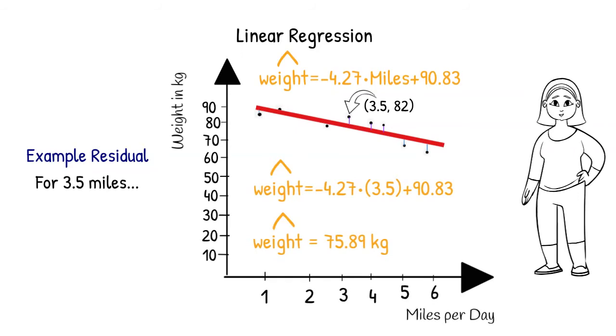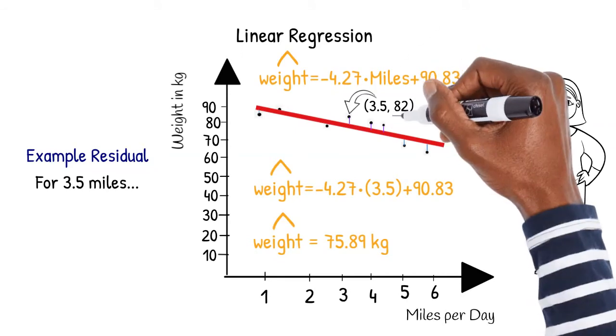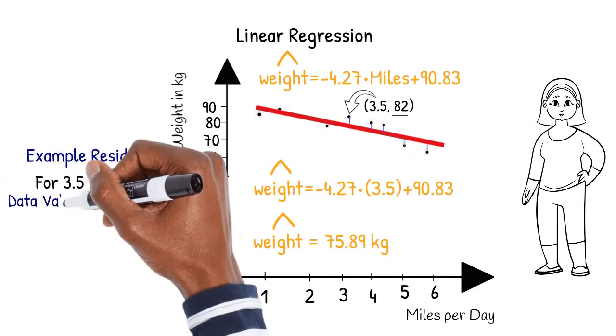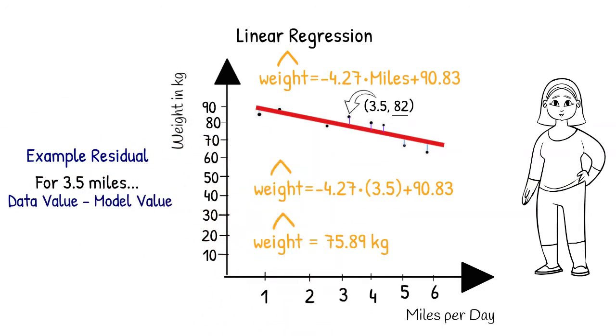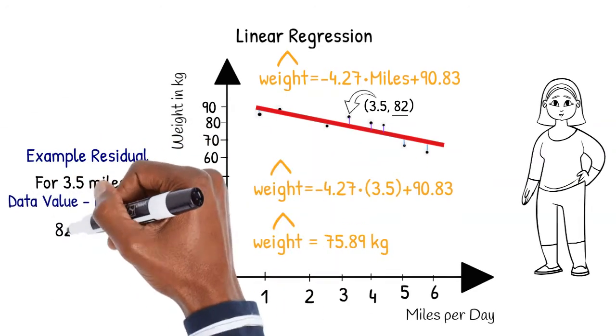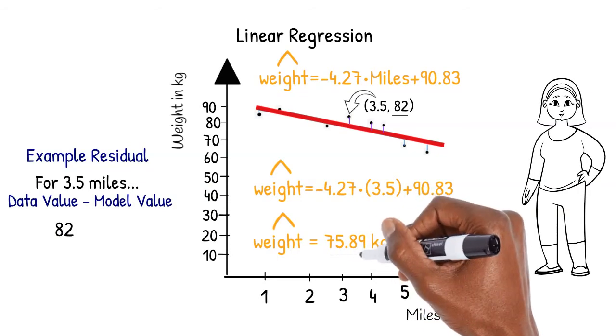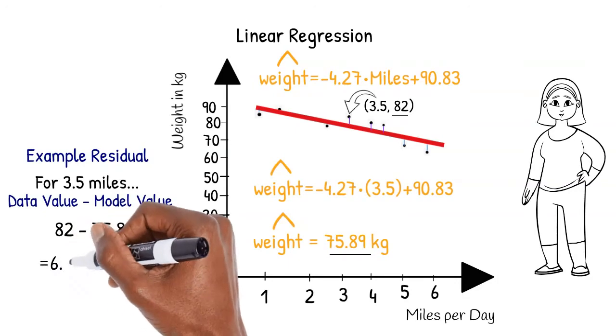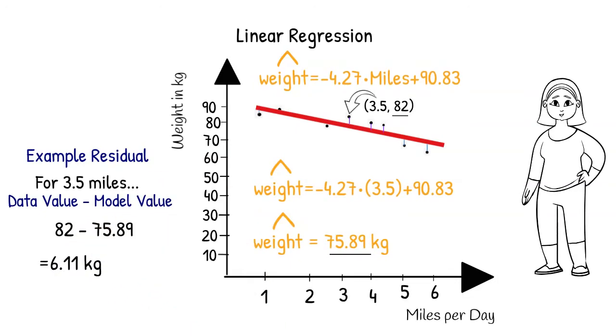But we know that a woman who walks 3.5 miles in our study weighs 82 kilograms. The difference between the data value and the model value is the residual. 82, the data value, minus 75.89, the model value, is equal to 6.11 for this case.